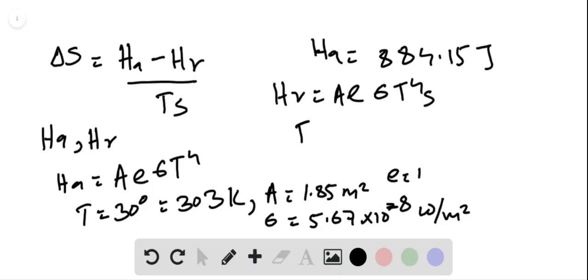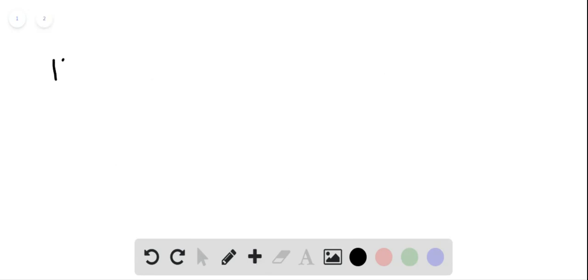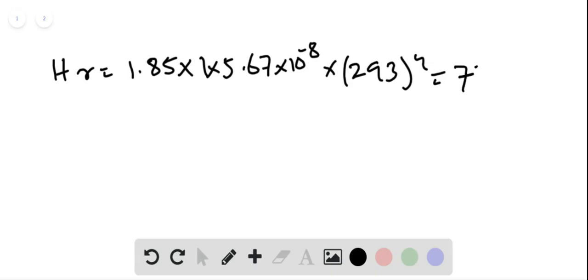TS is 293 Kelvin. Then HR for the given values will be 1.85 times 1 times 5.67 times 10 to the power minus 8 times 293 to the fourth. This gives us 773.08 joules.